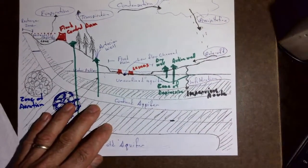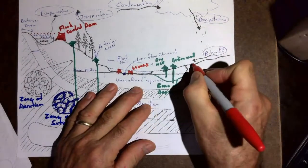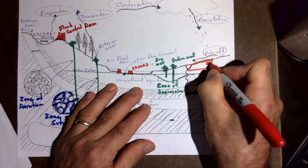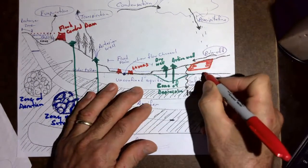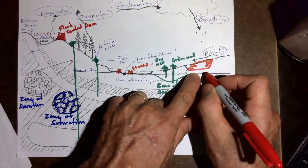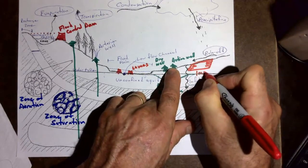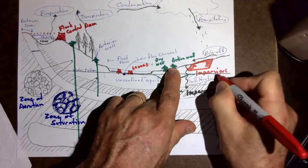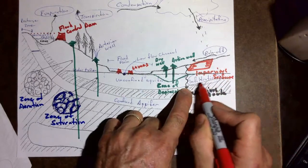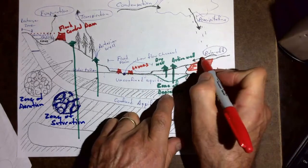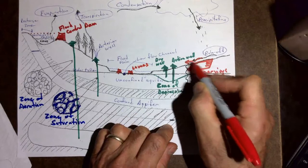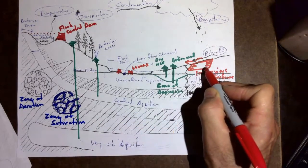Another human element: we build parking lots, roads, houses — anything impervious we put on top of the ground. We call these impervious surfaces. Impervious surfaces stop infiltration and increase runoff — they prevent infiltration and increase runoff. That's super important and we'll get to it.